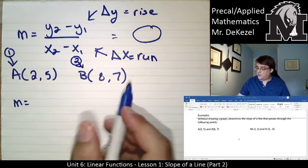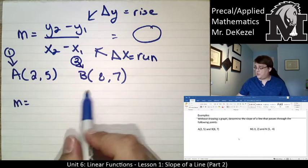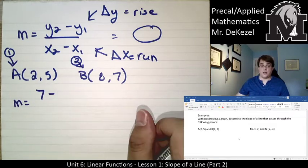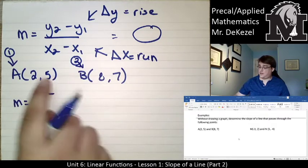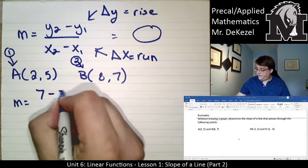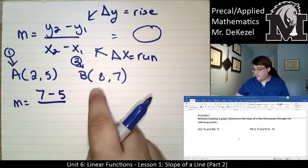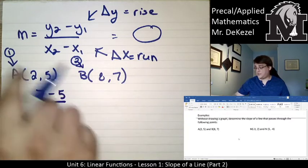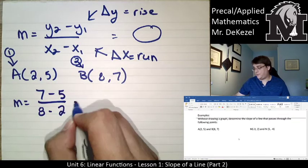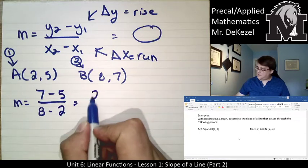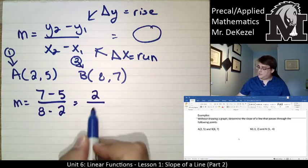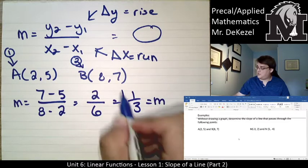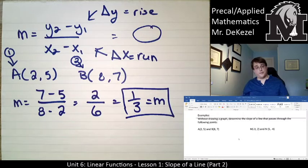Slope is equal to y2. So, the y-point of point 2, so that'd be 7, subtract y1, the y-point of the first point, that'd be 5, divided by x2. So, this is the second point, the x-value, that's 8. x1, the first point, the x-value, that's 2. Now we have 7 minus 5 is 2. 8 minus 2 is 6, we're going to reduce that to 1/3. Our slope is 1/3.